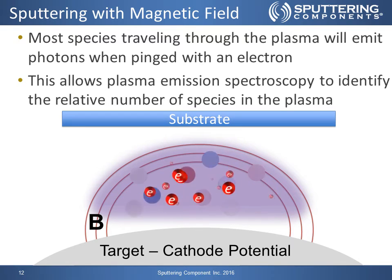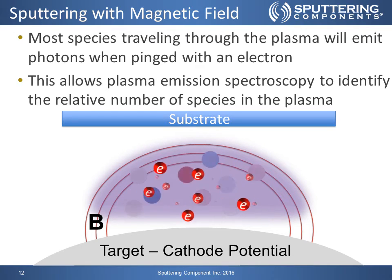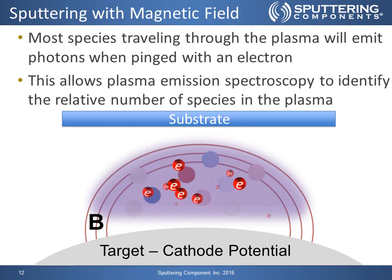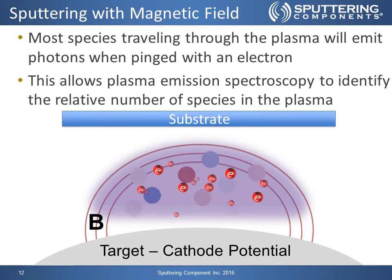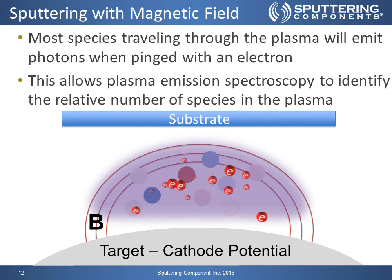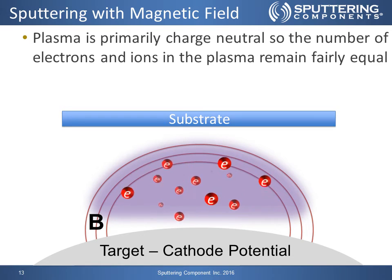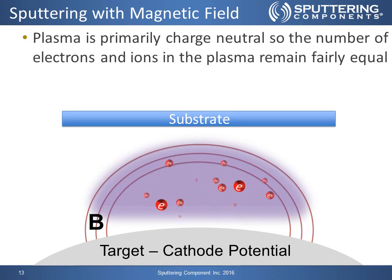Most of these species traveling through the plasma will emit photons when pinged by electrons, and this allows plasma emission spectroscopy to identify relative numbers of species in the plasma. If you have a spectrometer and look at the light emission, you will see not only the ionization of the argon and the metastable creation, but if you have trace amounts of oxygen, nitrogen, water, hydrogen, or any other gas species in your system, they will also start to emit light. The plasma is also primarily neutrally charged, so the number of electrons and ions in the plasma remains fairly equal.